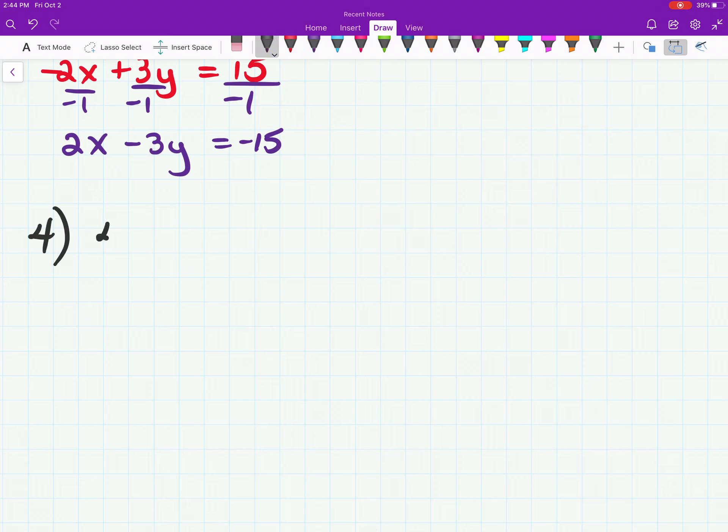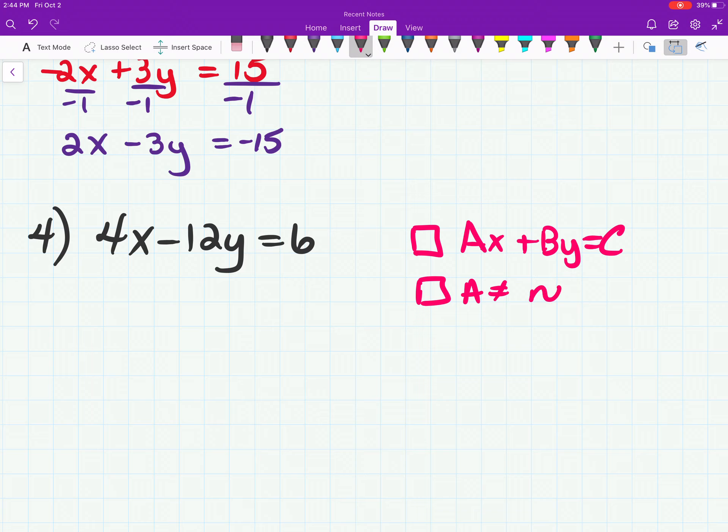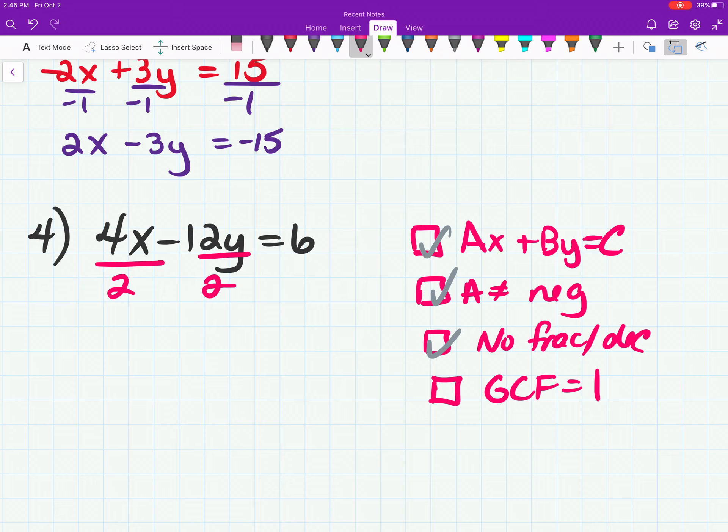Okay, one more problem, and this is a quick one. Number 4. 4x minus 12y equals 6. Boxes. This already looks like it's an ax plus by equals c. You know what? A is not negative. We're good there. No fractions or decimals. And guess what? We have a problem with the GCF. So everything else is checked off. But what goes into 4, 12, and 6? We can divide everything by 2. And so we have to do that. And there we go. Now we can check the final box, and we have done it correctly.